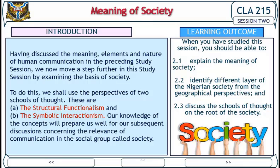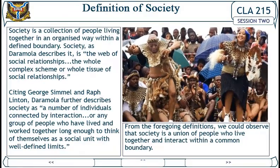A knowledge of these concepts will prepare us well for subsequent discussions concerning the relevance of communication in the social group called society. Learning outcomes: when you have studied this session, you should be able to: one, explain the meaning of society; two, identify different layers of the Nigerian society from the geographical perspective; and three, discuss the schools of thought on the roots of society.